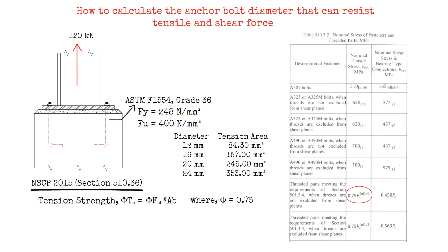In this case, our tensile load is 120,000 N divided by 4, that would be 30,000 N, which would be carried by each anchor bolt. Therefore, we have